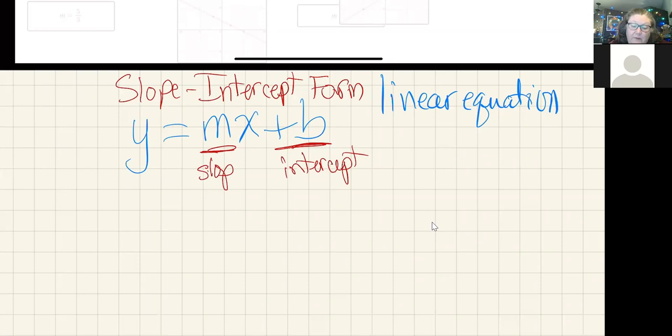Okay, so just reviewing here, we have a linear equation called y equals mx plus b. We call this equation slope-intercept form because the m is our slope, and the plus b is the y-intercept.